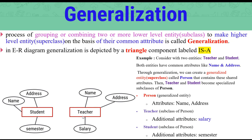Example: Consider two entities — Student and Teacher. These two entities each have their own attributes. The Student entity has attributes such as name and Student-specific attributes. The Teacher entity also has its own attributes. In generalization, we group or combine two or more lower-level entities. These entities are grouped and the resulting higher-level entity is called a superclass through generalization.